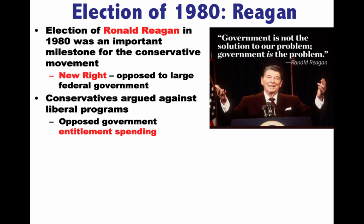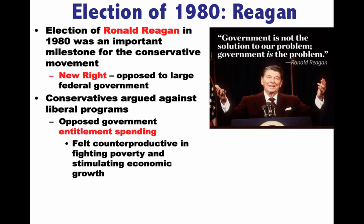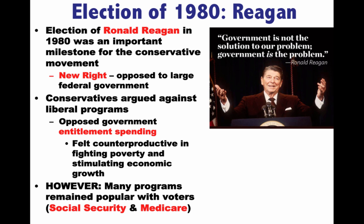The new right is against liberal programs and opposed government entitlement spending — programs like food stamps and welfare, which had expanded significantly between 1960 and 1980, especially with the Great Society. They wanted cuts, arguing these programs were counterproductive in fighting poverty, created dependency, and didn't stimulate economic growth. However, many programs remained popular with voters, especially Social Security from the New Deal and Medicare under the Great Society. Those programs would sustain during Reagan's presidency as well.